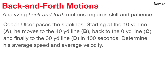Now we'll look at one of the more difficult problems with average speed and average velocity — a back-and-forth problem requiring some diagramming and careful thinking. Coach Ulcer paces the sideline: starts at the 10-yard line (position A), moves to the 40-yard line (B), back to the 0-yard line (C), and finally to the 30-yard line (D). It all takes 100 seconds, and we must determine his average speed and average velocity.